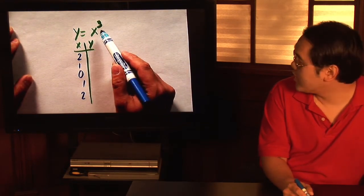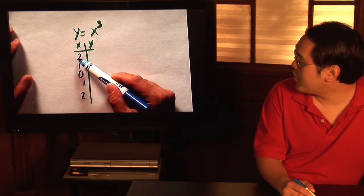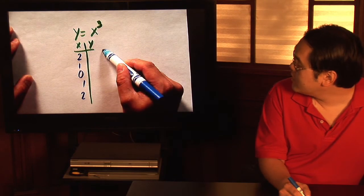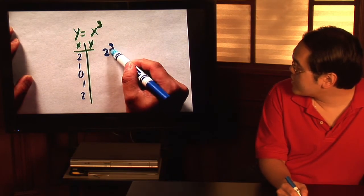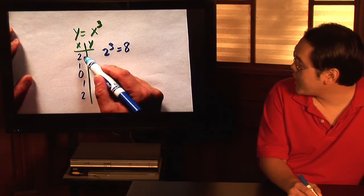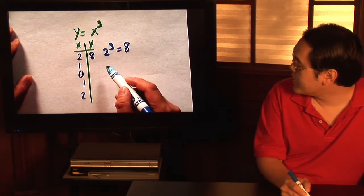Now, the function here is y equals x cubed. So first, we're going to plug in 2 in place of x. So the first y coordinate is going to be whatever 2 cubed is. Well, 2 cubed is going to give you 8. So when x is 2, the y coordinate is 8.